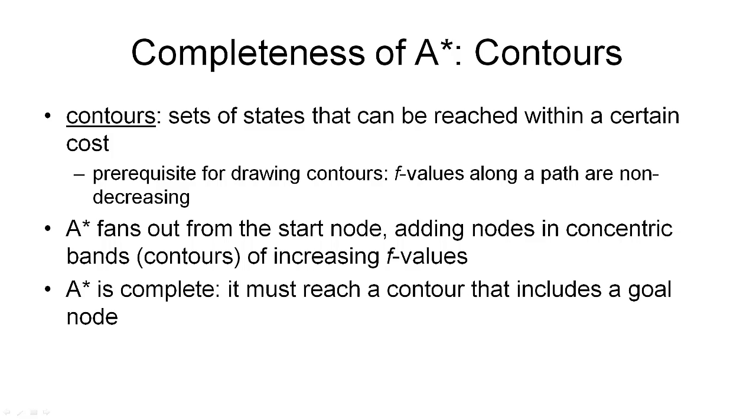The completeness of A star simply follows from this. Because as it explores more and more nodes, the contours are growing and growing. And eventually, this must include a goal node. This is true because each contour can only contain a finite number of states. And once these are all explored, A star will go to the next higher altitude and explore a bigger contour.